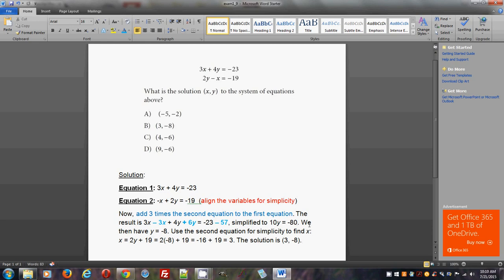Now, the next thing, so we then have y equals negative 8. Negative 80 divided by 10. So you divide both sides by 10 and you get y equals negative 8.